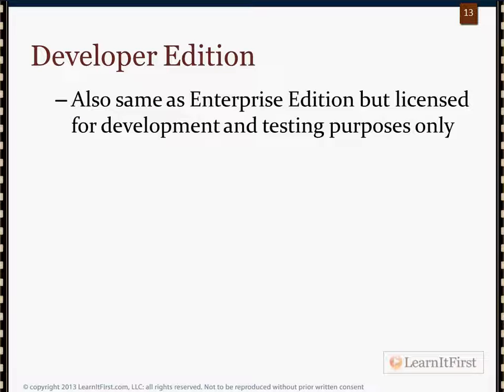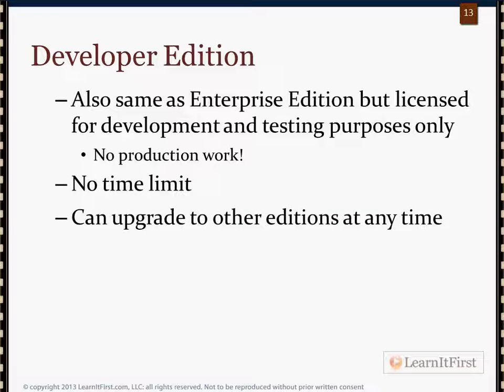The Developer Edition is what I'll be using most of the time during this course. It also has the same features as Enterprise Edition, but the license only allows development and testing — no production level work. There is no 180-day time trial. You can buy it on Amazon for something like $45, or it comes included with an MSDN subscription. You can also upgrade the Developer Edition to other editions if needed.